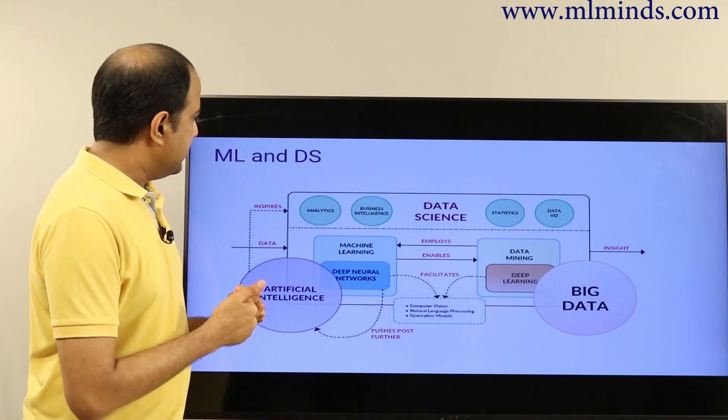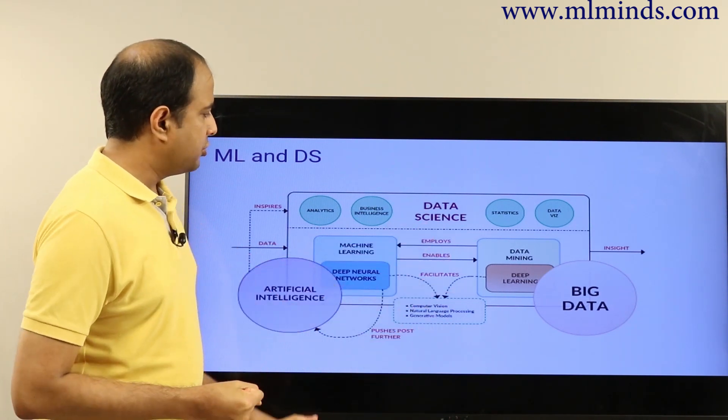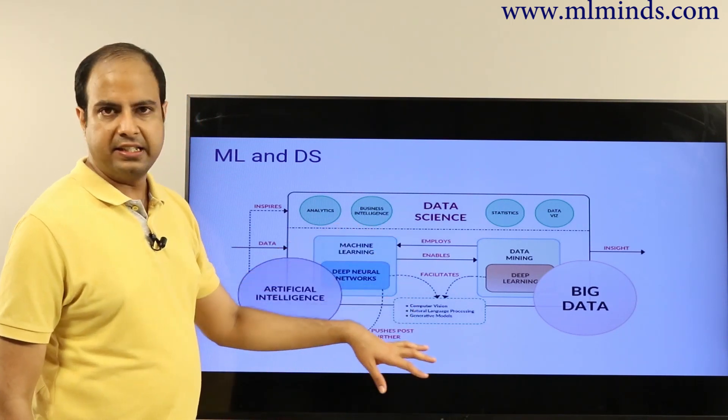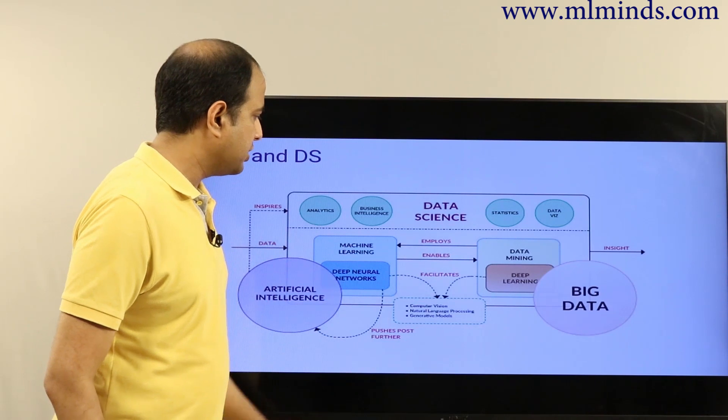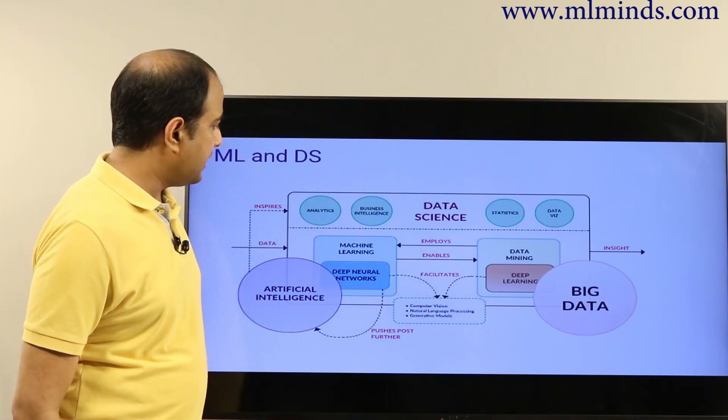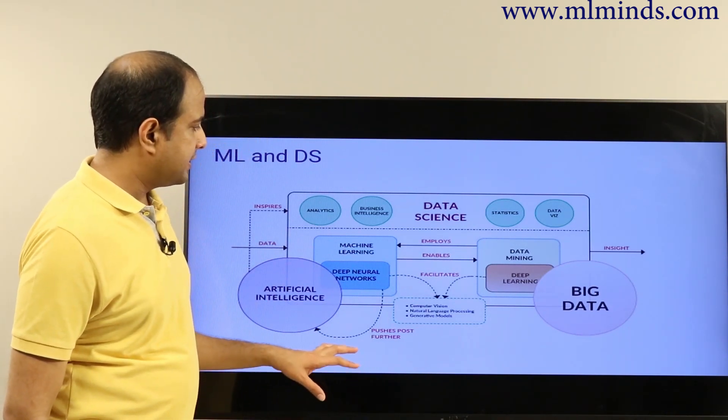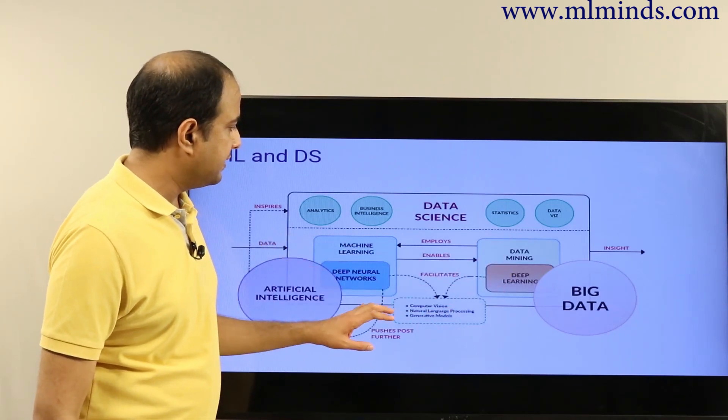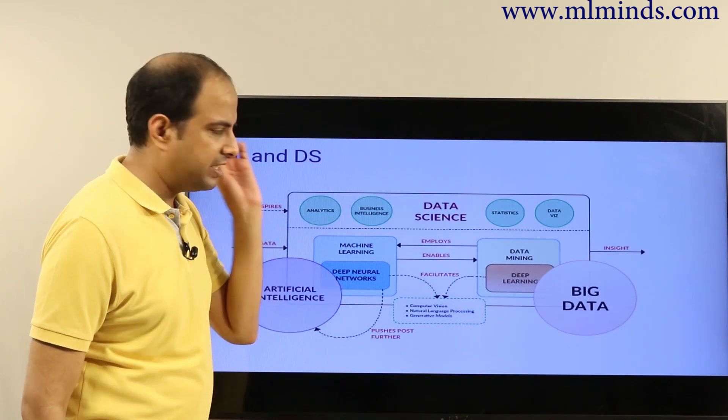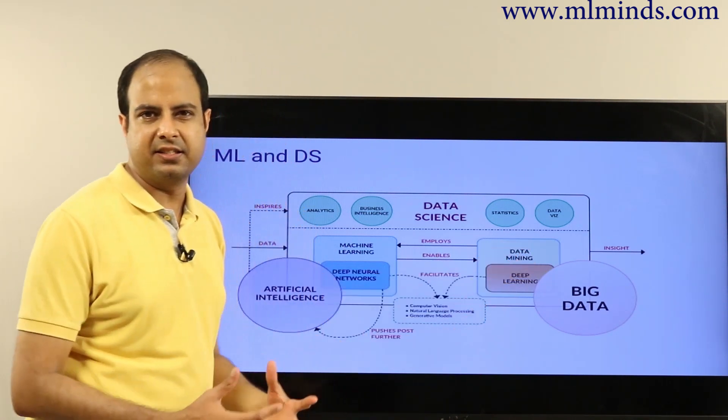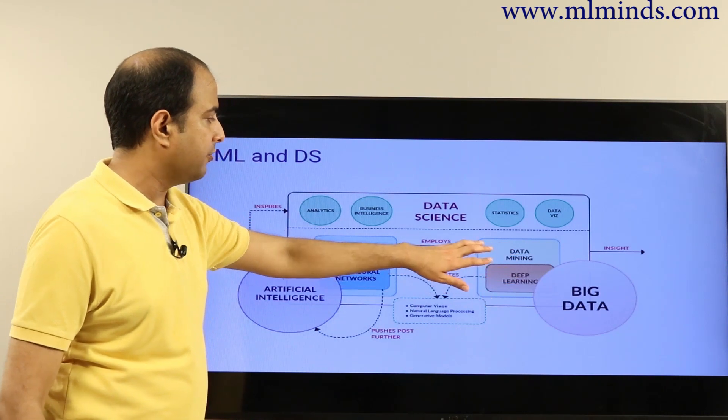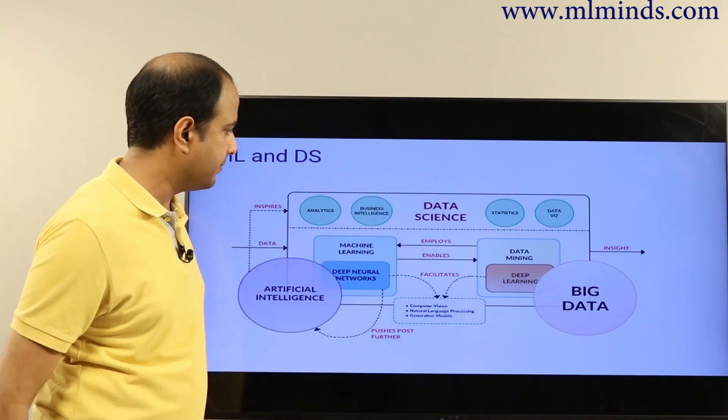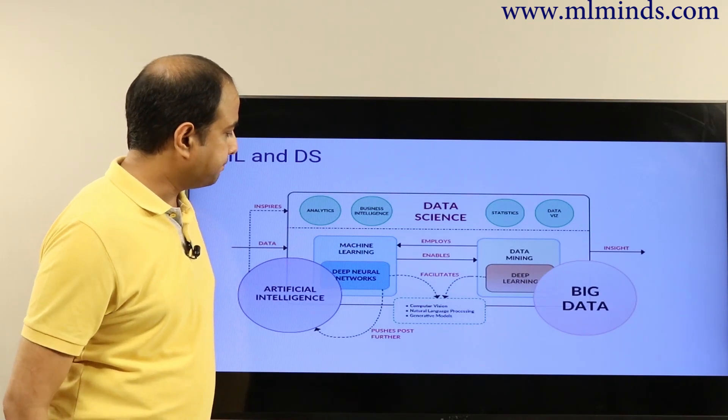This is another diagram which shows you the relationship between these things from a functional perspective. Data science is about analytics, business intelligence, statistics, and data visualization. Then there is machine learning and data mining. Data mining applications sort of employ machine learning—machine learning tools can be used for data mining.